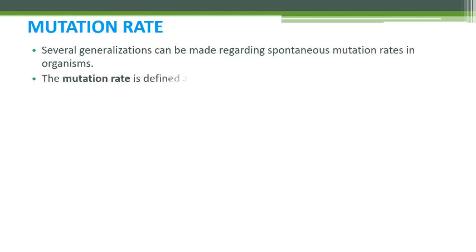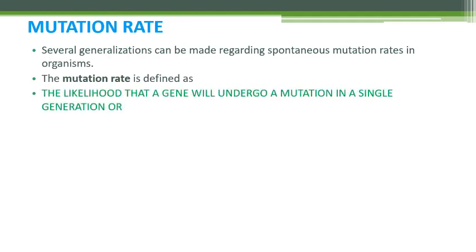As far as the mutation rate is concerned, let's define it first. It states that the likelihood that a gene will undergo a mutation in a single generation — what are the chances of a mutation from one generation to the next, whether it will mutate or not.